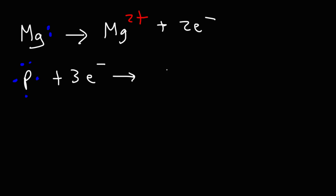And when it picks up those three electrons, it's going to have a negative three or 3- charge. And at this point it's going to have eight valence electrons.